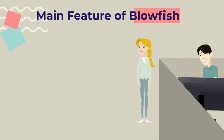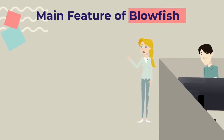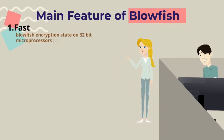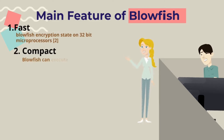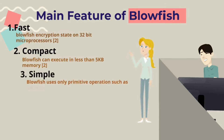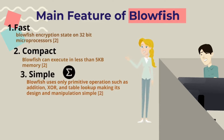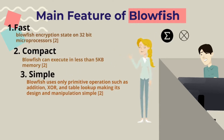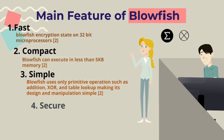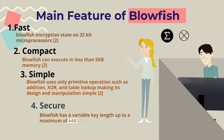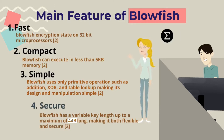Main features of Blowfish: Fast — Blowfish encryption runs on 32-bit microprocessors. Compact — Blowfish can execute in less than 5 kilobytes of memory. Simple — Blowfish uses primitive operations such as addition, XOR, and table lookup, making its design and implementation simple. Secure — Blowfish has a variable key length up to a maximum of 448 bits, making it both flexible and secure.